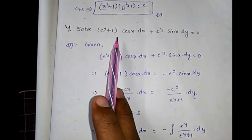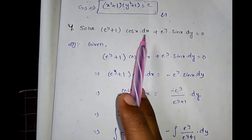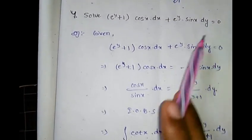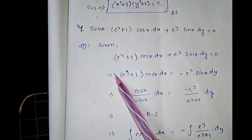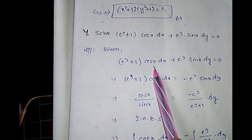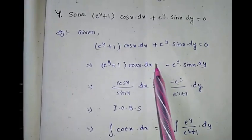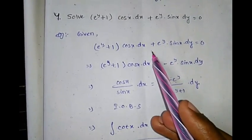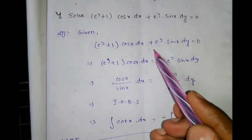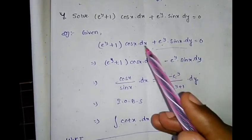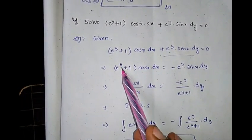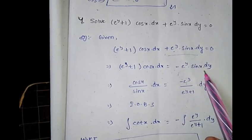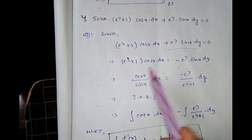Fourth problem: Solve (eʸ+1)cosx dx + eʸ sinx dy = 0. Separating terms: move eʸ sinx dy to the other side. So (eʸ+1)cosx dx = −eʸ sinx dy.